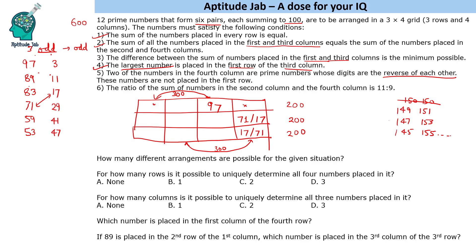The last condition says the ratio of the sums of the second and fourth columns is 11:9. The total of these two columns is 300, so 20x = 300, giving x = 15. Therefore the second column sums to 165 and the fourth column sums to 135. We know two numbers in the fourth column are 17 and 71, totalling 88, so the third number in the fourth column is 47.